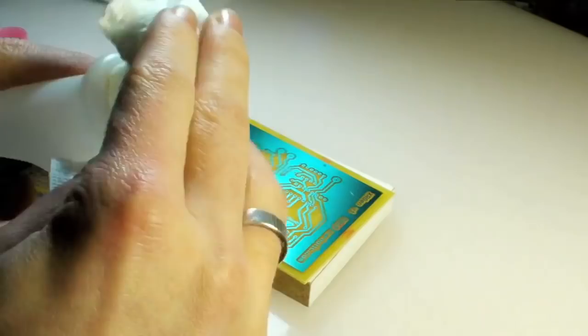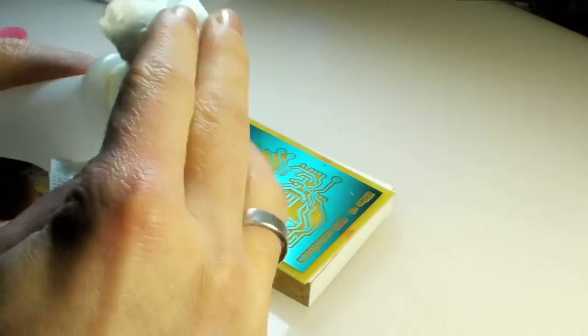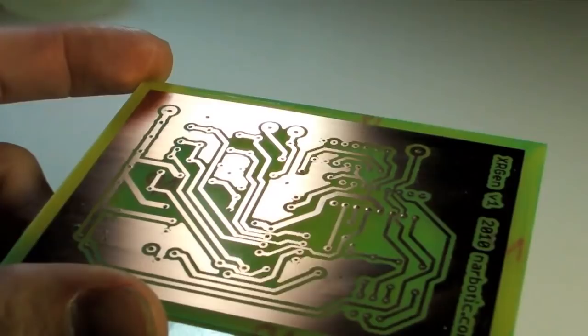Once all the holes are made, I use some nail polish remover and paper towel to wipe off the resist. Once the board is totally clear of resist, well, that's it. It's done. It does look pretty.